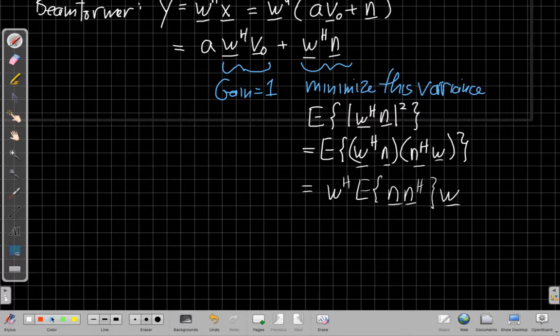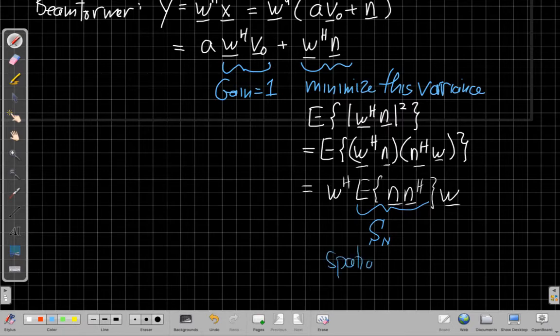But this thing in the middle we've seen before, too. This is the spatial covariance of the noise, which we often call S sub capital N. This is the spatial covariance of the noise, or the spatial covariance matrix.